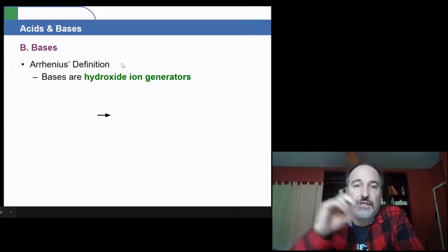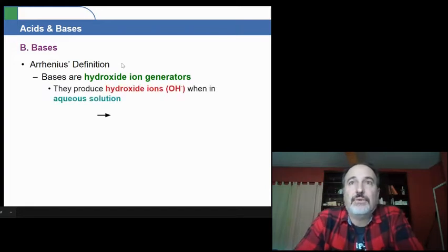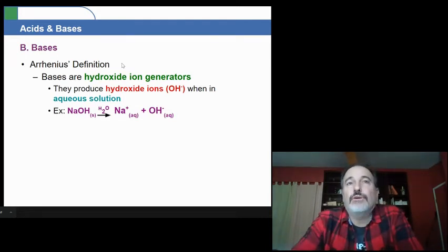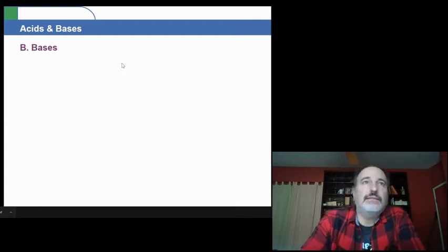Hydroxide. In other words, an OH, capital O, capital H. It's a negative one charge. And when it's dissolved in water, for example, sodium hydroxide, when you dissolve it in water, will produce sodium ions and hydroxide ions.